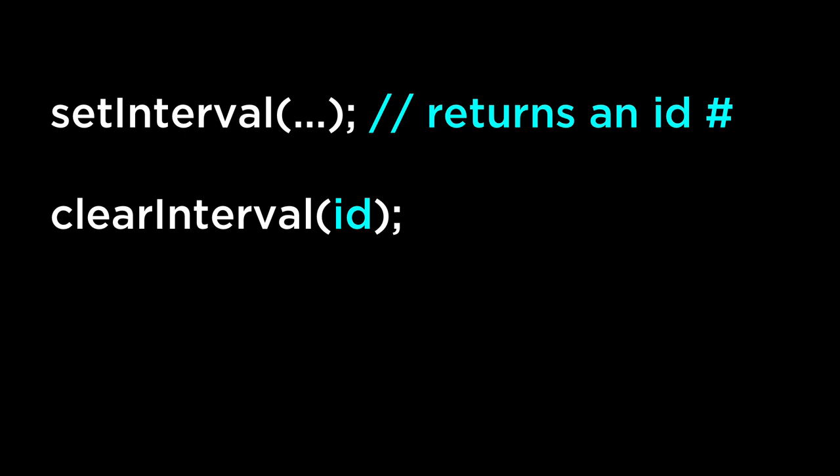Before we show the JavaScript example, a quick tip on working with setInterval in JavaScript. When you execute the setInterval command, it will return an ID number — the internally assigned ID for that setInterval process. To stop a particular setInterval process, you have to use the clearInterval command with the ID of the process you want to stop. We'll show this in the JavaScript example.